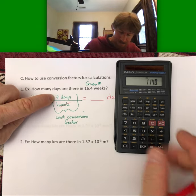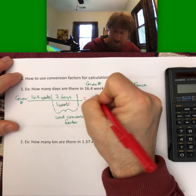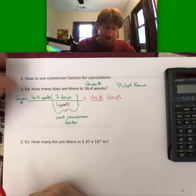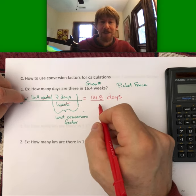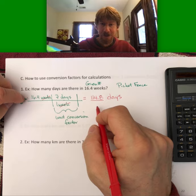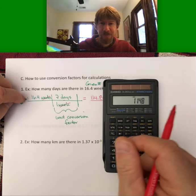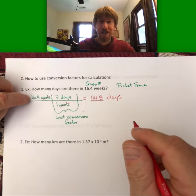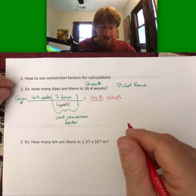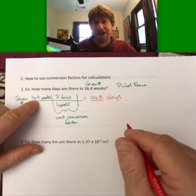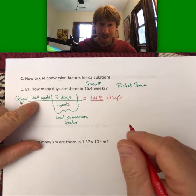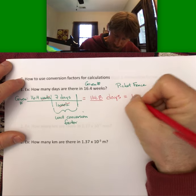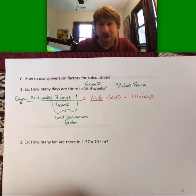Multiplying 16.4 by 7, we get 114.8 days. If you're entering this in the learning management system, 114.8 is fine. With correct sig figs — since all exams, lecture outlines, and homeworks accept three sig figs — we round up to 115 days.